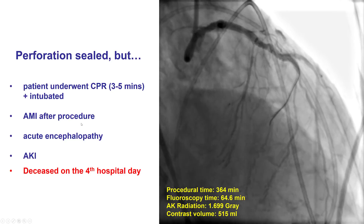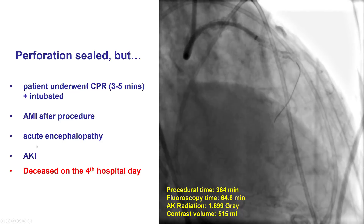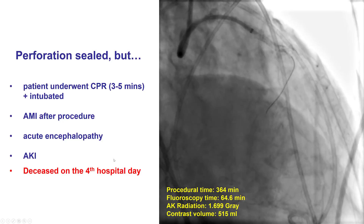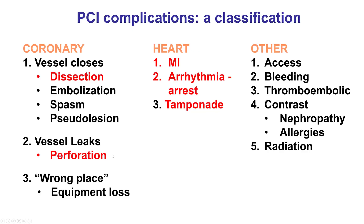The patient had a complicated post-hospital course with encephalopathy, acute kidney injury, myocardial infarction, cardiogenic shock, and eventually died four days later. This was clearly a very dramatic case with a poor outcome where multiple things did not go well: acute vessel closure, aortocoronary dissection requiring treatment, perforation, arrhythmia with transient arrest, tamponade requiring pericardiocentesis, and significant myocardial infarction both at baseline and possibly from occlusion of the large diagonal branch.